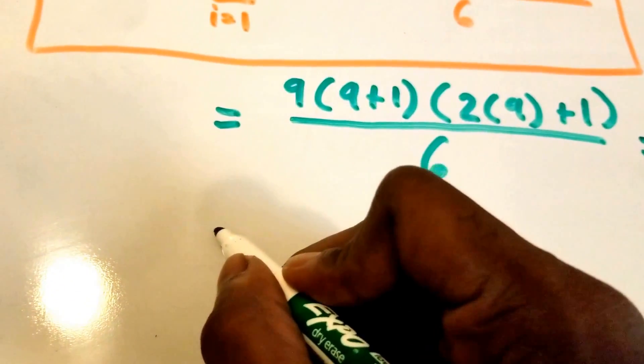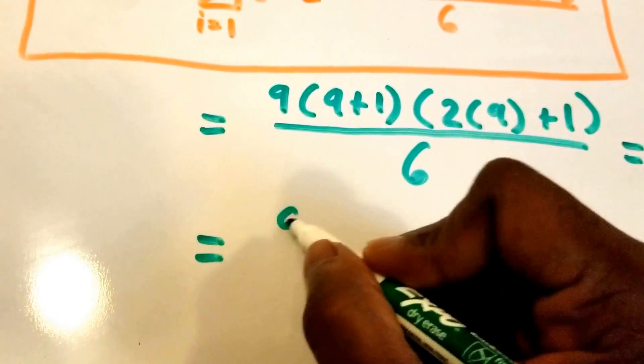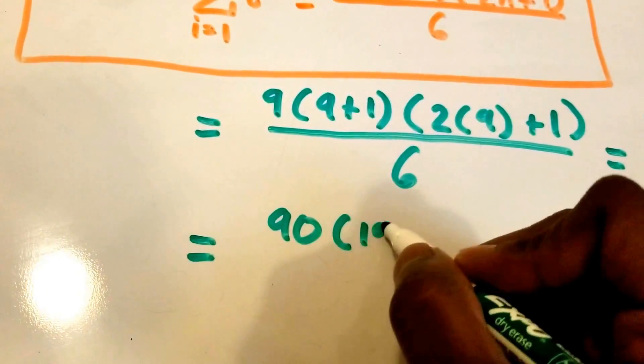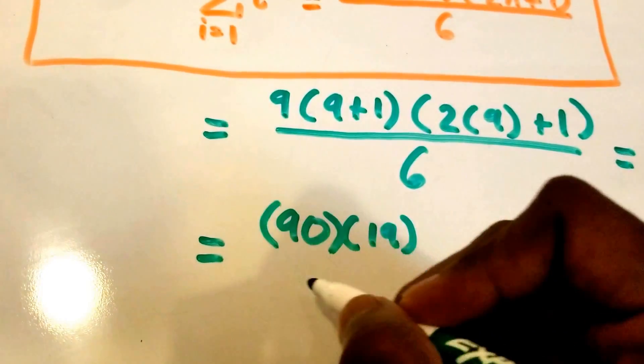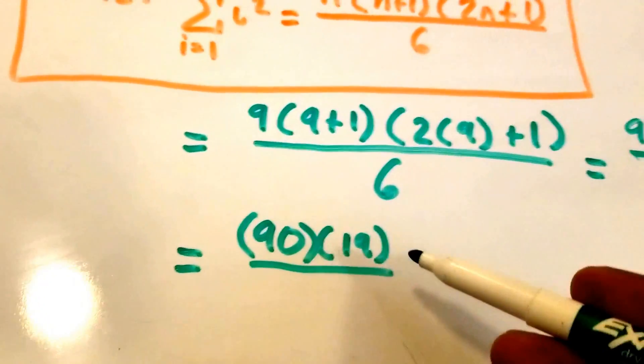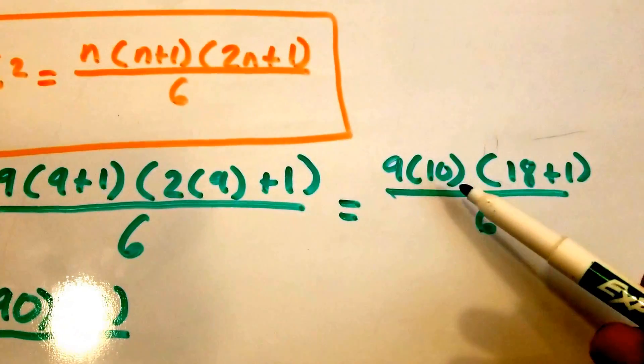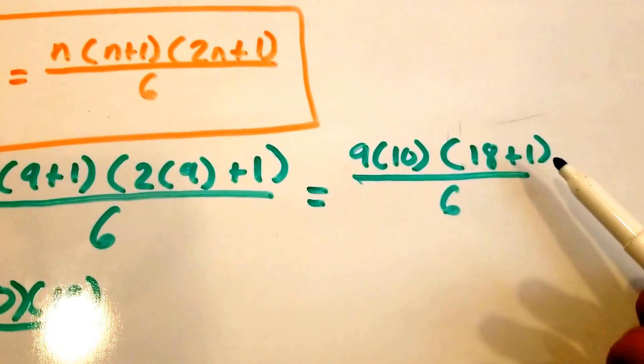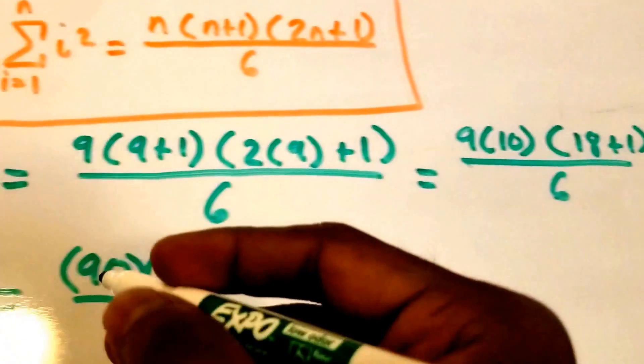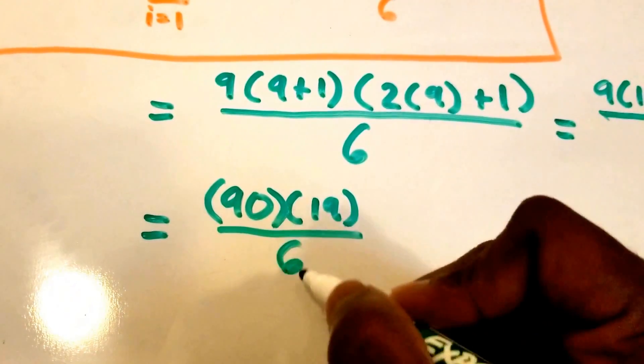All right, we're going to come down here. And so now we get 90 times 19, because 9 times 10 is 90 and 18 plus 1 is 19, and then we still have our divided by 6 that we must put here as well.